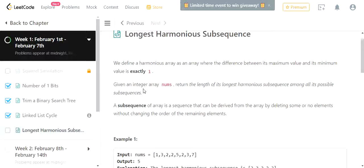So what is a harmonious subsequence or harmonious array? A harmonious array is where the difference between its maximum value and its minimum value is exactly 1. The subsequence of an array is a sequence that can be derived from the array by deleting some or no elements without changing the order of remaining elements.